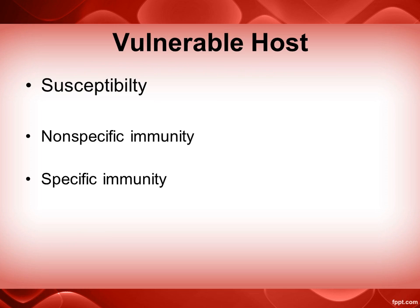Finally, we have our vulnerable host, which is the one who is susceptible to the disease. For many infectious diseases, susceptibility can be due to a number of factors. There is nonspecific immunity or specific immunity. Nonspecific immunity can be based on the genetic makeup of the person, or if they have a disease that causes immunocompromise, or immunosuppressive therapies that could make a host more vulnerable. Specific immunity occurs with past history of the disease, like chicken pox, when you've had the disease and built up antibodies against it. Vaccines also cause specific immunity, much like how the hepatitis B vaccine can provide immunity against hepatitis B. Having these immunities will make a host less susceptible.